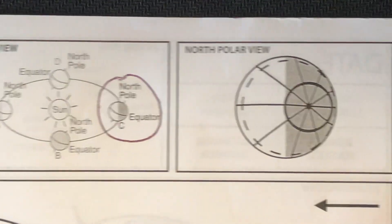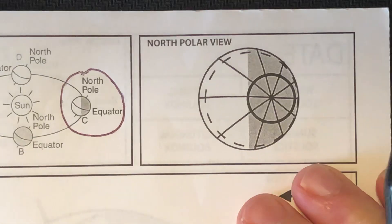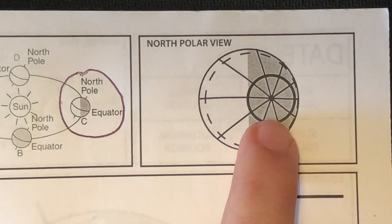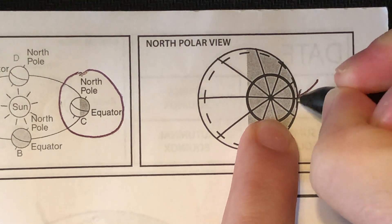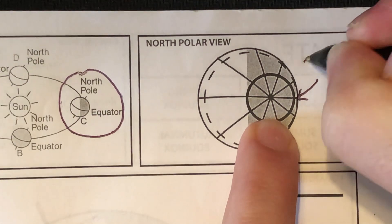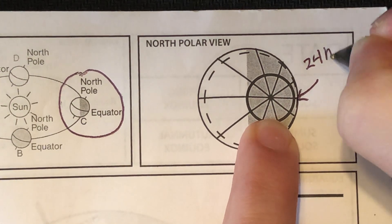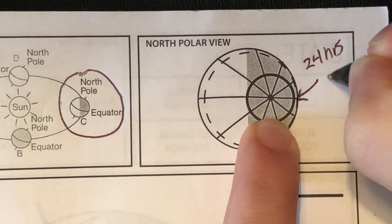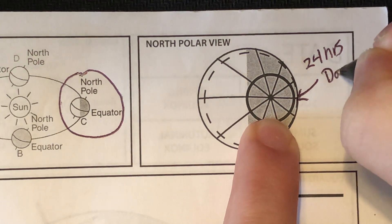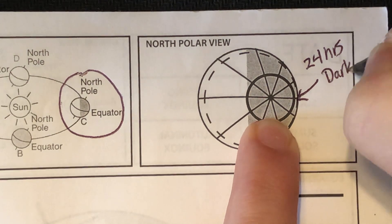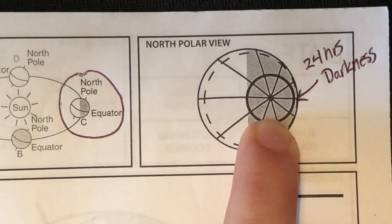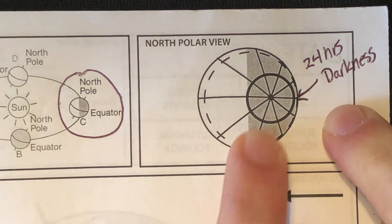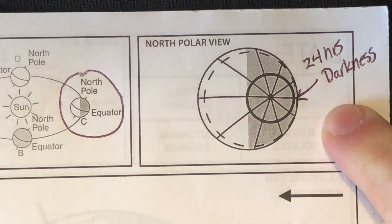How do I know from the North Pole perspective that this is winter? The North Pole is in 24 hours of darkness. When the North Pole doesn't get any daylight, you know it's going to be wintertime.